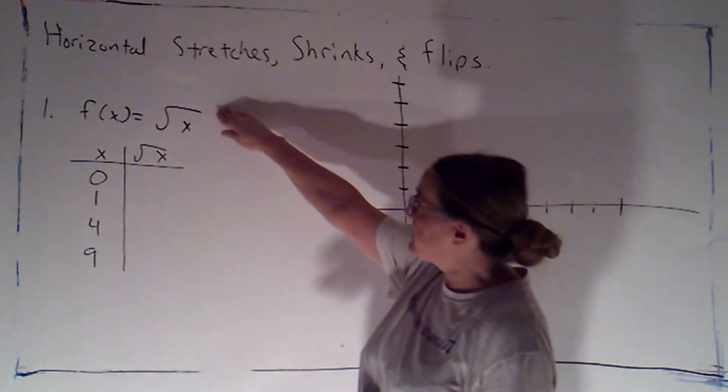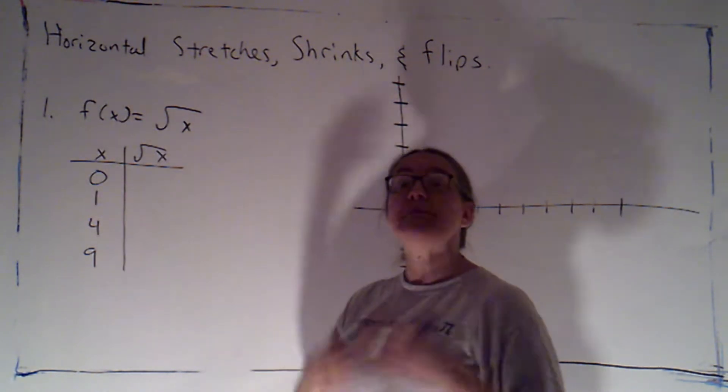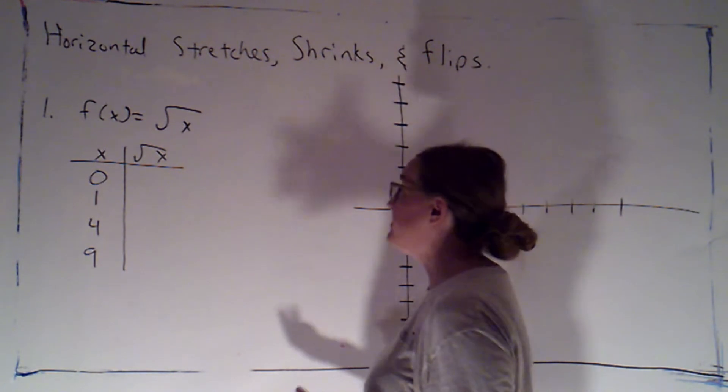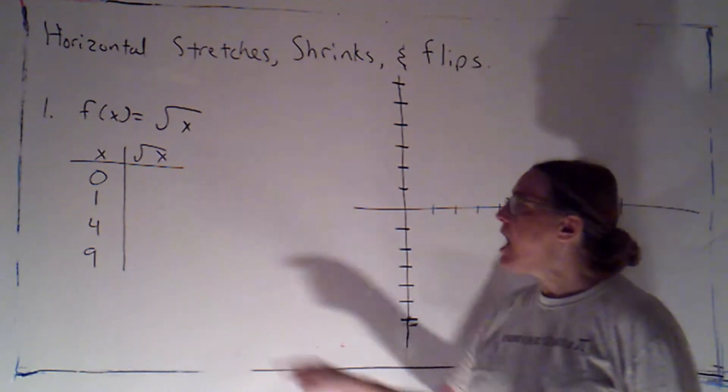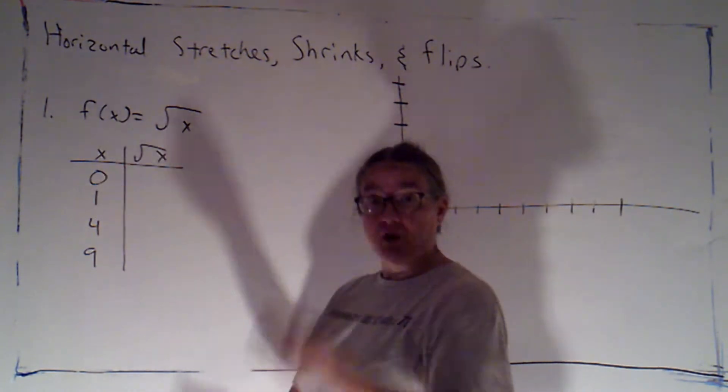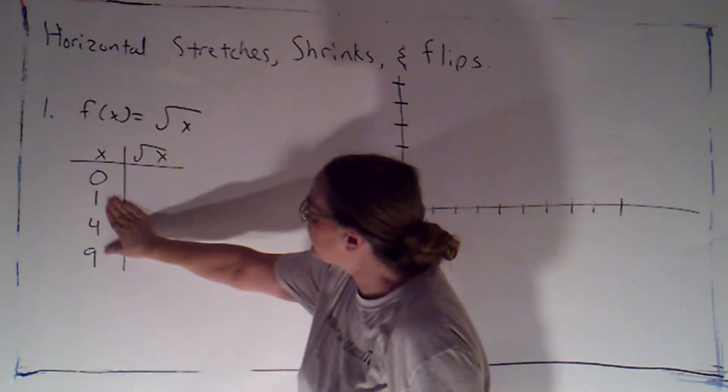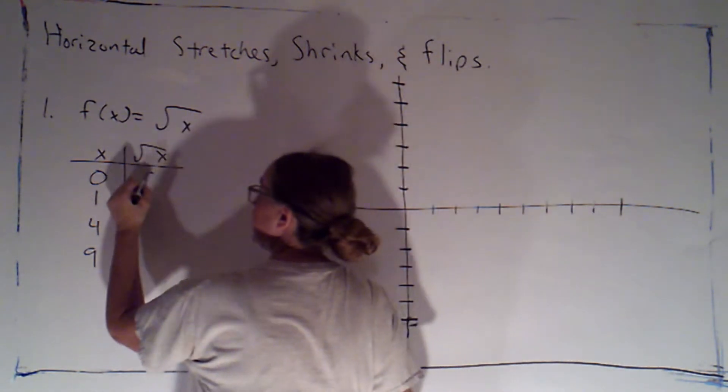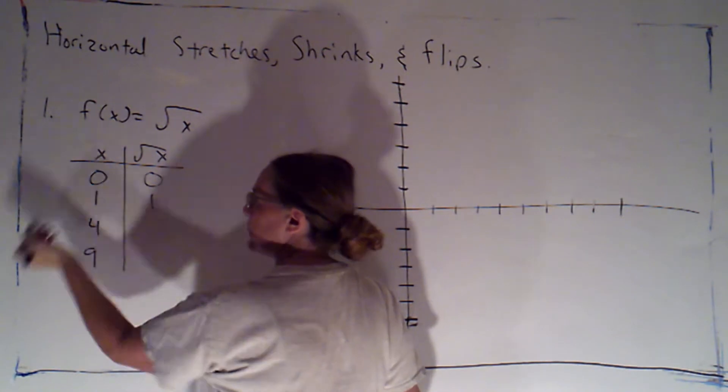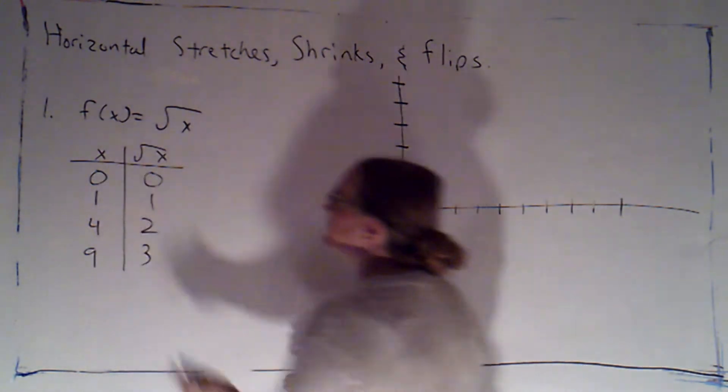Just a reminder, when we're working with the square root function, the choices for x that we want are going to be non-negative numbers because the domain only consists of non-negative numbers. We want to make sure that we include 0 because that's the point where the domain starts, and then we choose perfect squares for our x values so that the y values are nice. The square root of 1 is just 1, the square root of 4 is just 2, and the square root of 9 is 3.